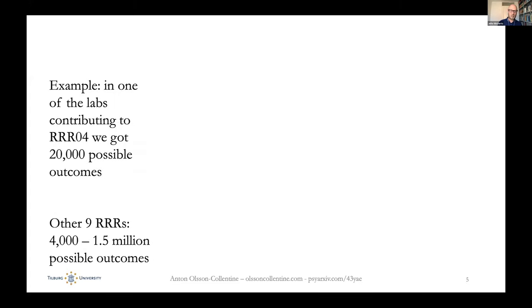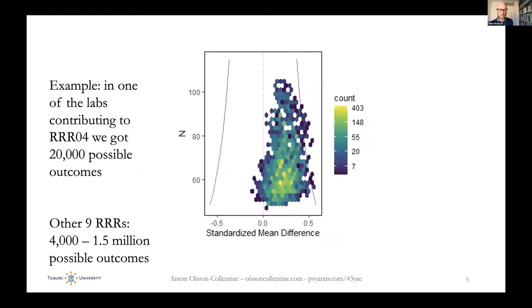This is one of the labs from the RRR. It's quite representative of the different outcomes. This is the standardized mean difference that you could obtain when you go through all the possible options to analyze the data, assuming that these are all arbitrary choices. In this case, 20,000 possible outcomes are depicted here, depicted in a way that you would recognize having done meta-analysis.